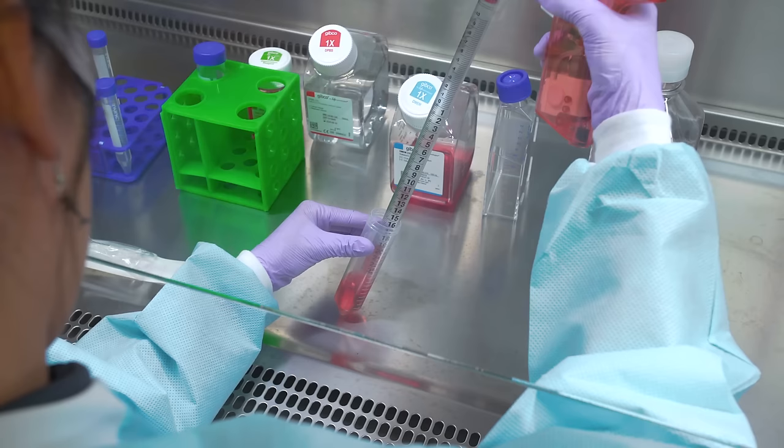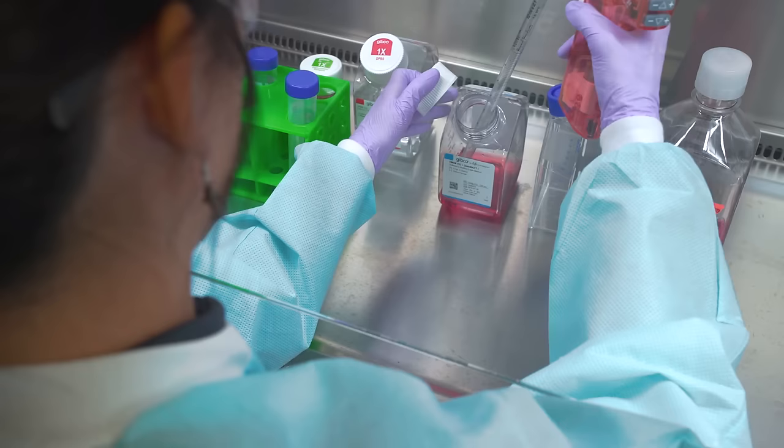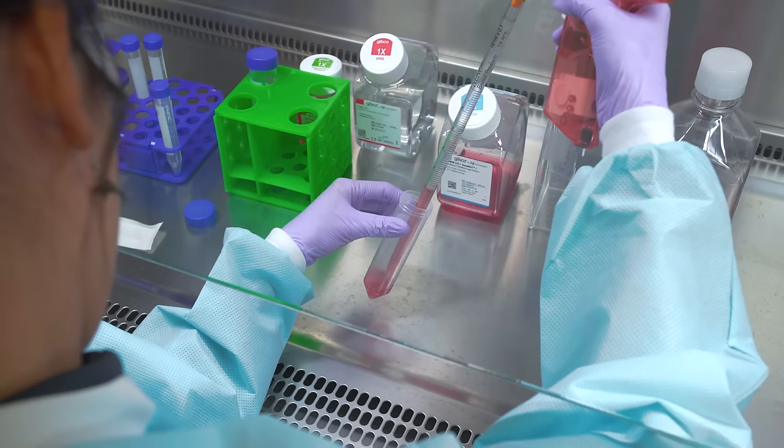Remove the medium from the centrifuge tube with a pipette and discard the medium into a waste container. Try not to disturb the pellet. Resuspend the pellet with warm, complete growth medium. Gentle pipetting will disperse the cells to ensure a homogenous solution of single cells.